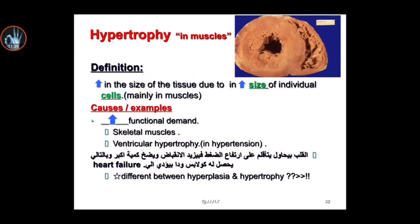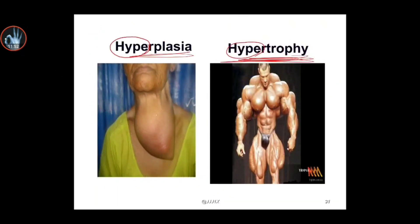For hypertrophy, it occurs in muscles. There is a difference between hyperplasia and hypertrophy. Hypertrophy occurs in the muscles. Hyperplasia occurs in the gland and targeting of the gland. Hypertrophy is an increase in the size of the cells; hyperplasia is an increase in the number of the cells.